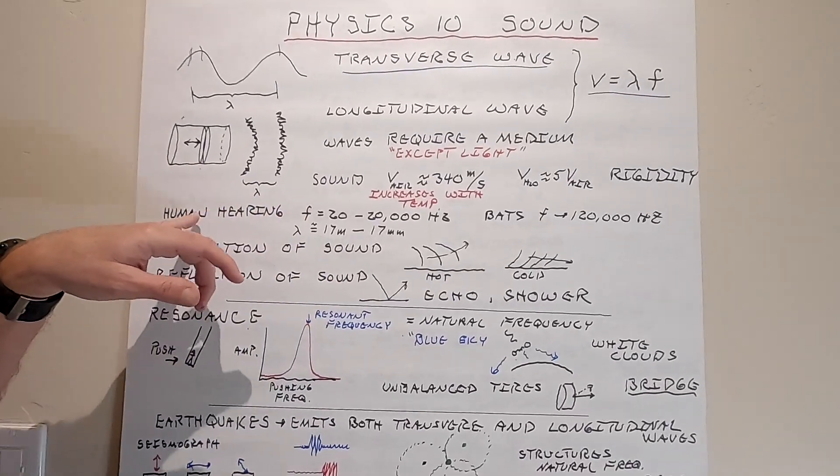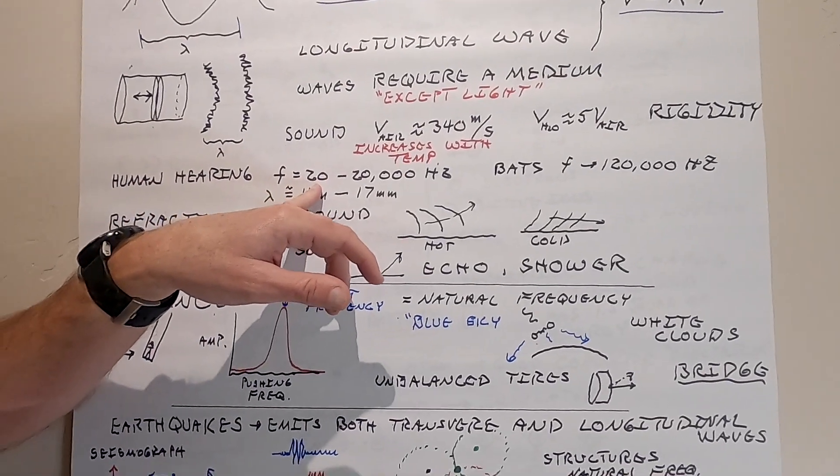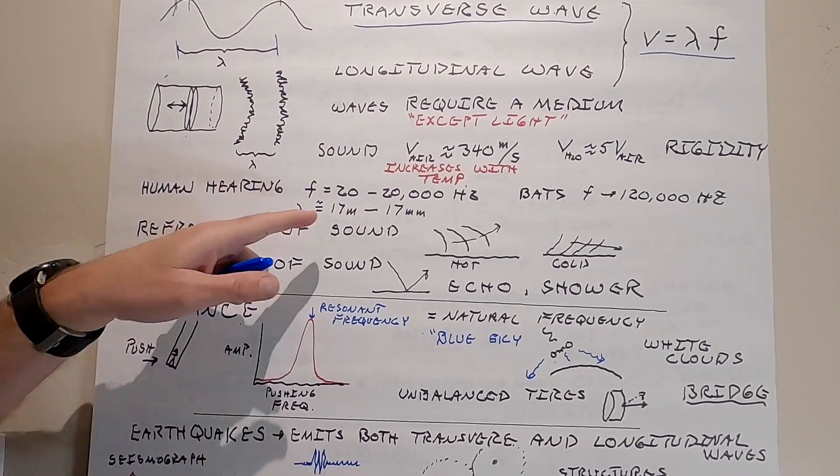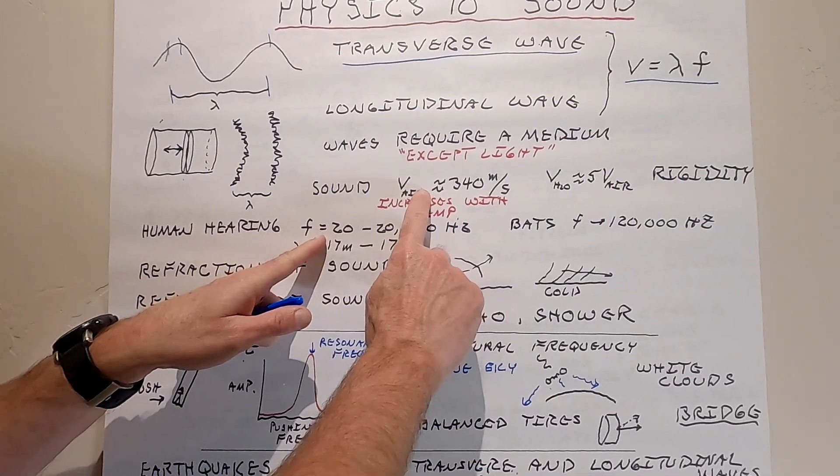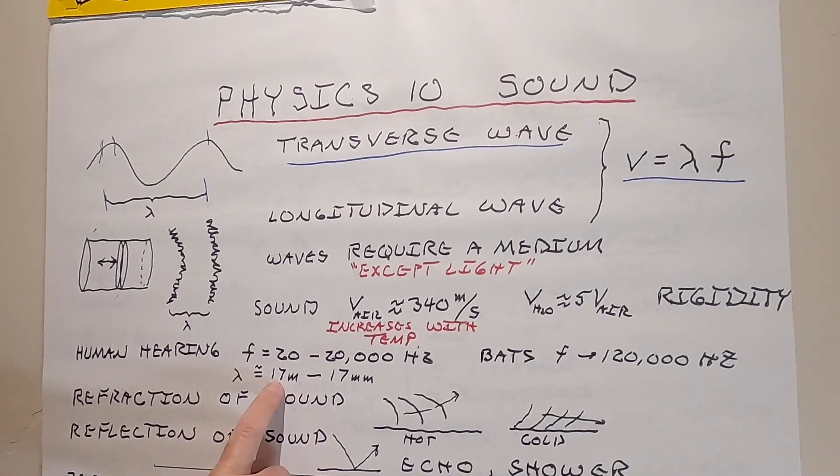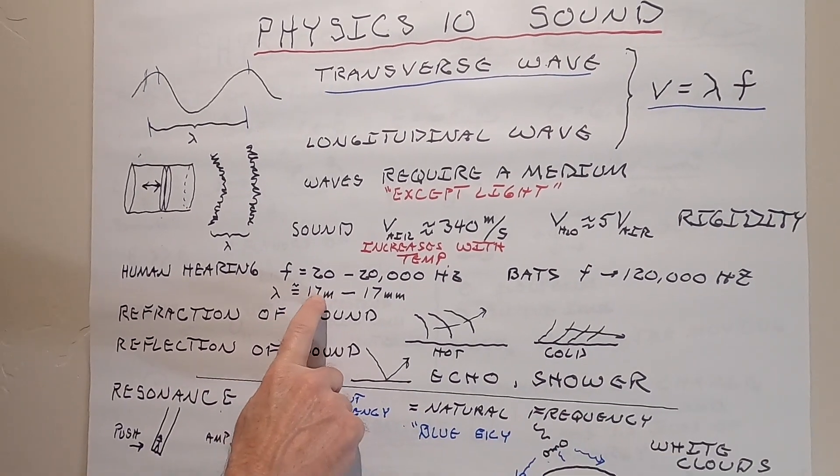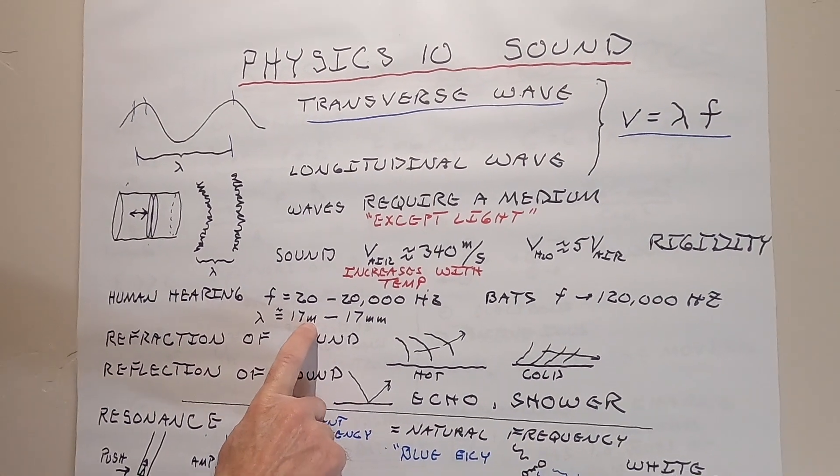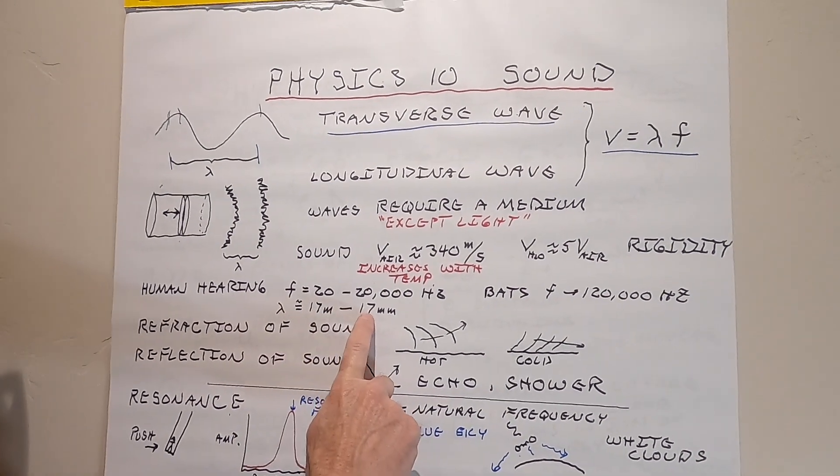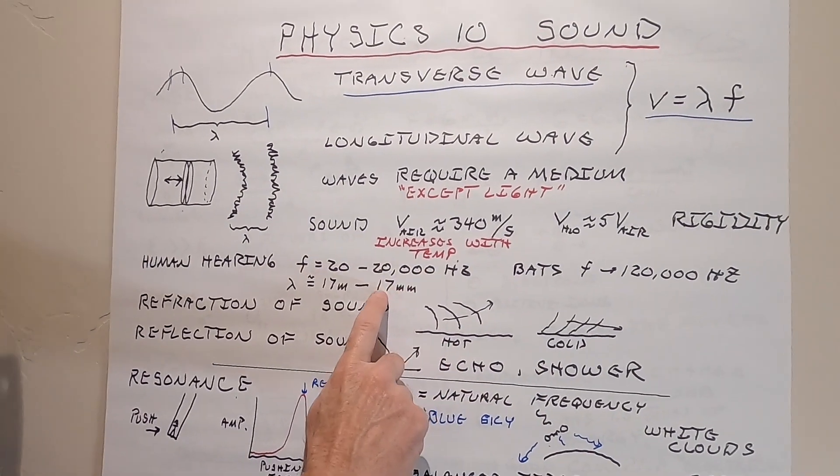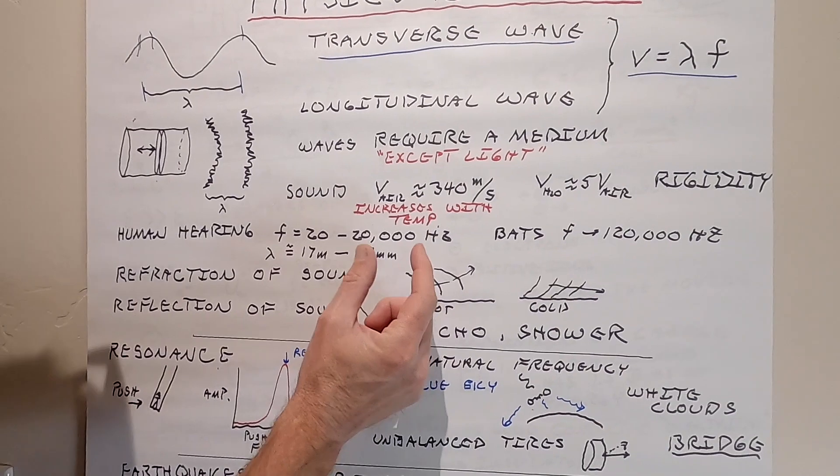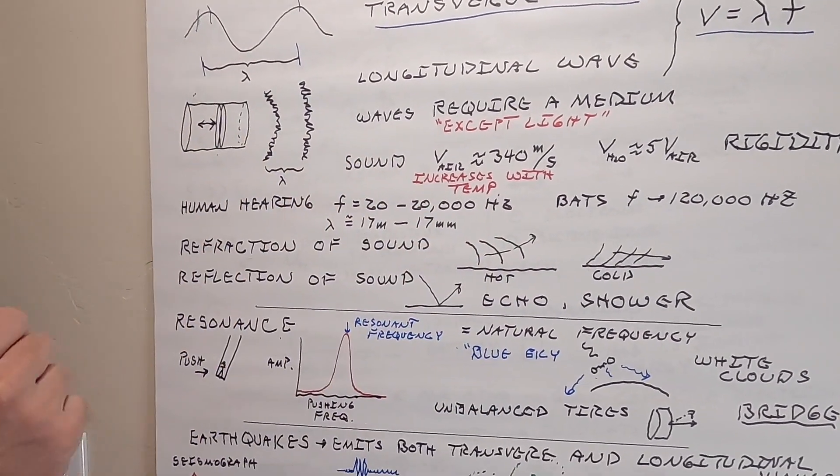Our range of hearing is about 20 shakes per second to about 20,000 shakes per second. Since we know the frequency and we know the speed, I guess we could get the wavelength. For these longest wavelengths, they're about 17 meters long. That's pretty big. That's bigger than the classroom. All the way down to at this highest frequency, that's about 17 centimeters. That's about this big. The smallest wavelength of sound we can hear is about that big.